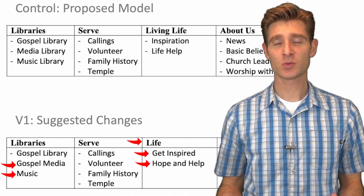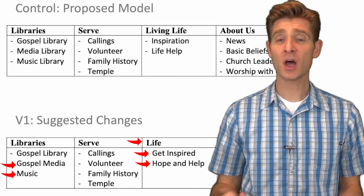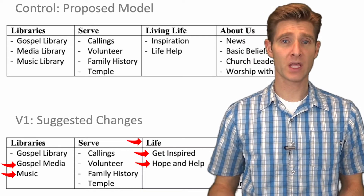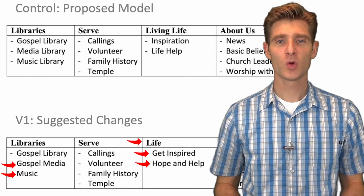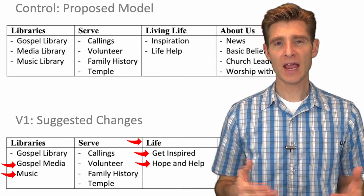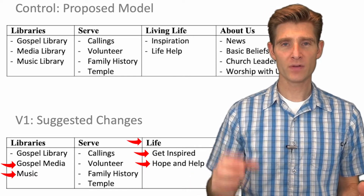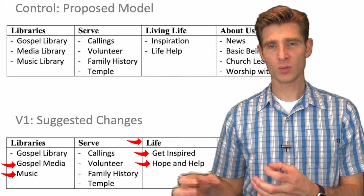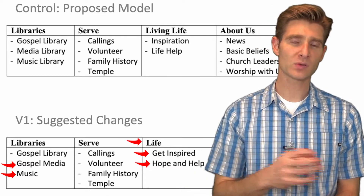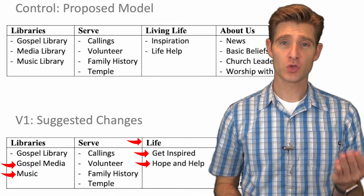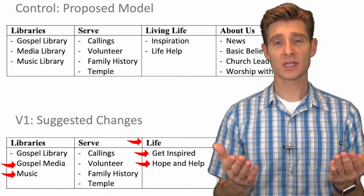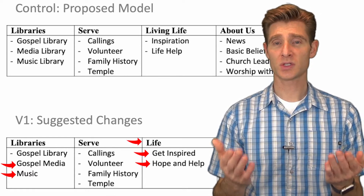We had recently run a series of navigation tests, and in one of the last navigation tests we wanted to try alternate words for some of the navigation items. For example, instead of 'life help' we wanted to try 'life.' Rather than making one variation to isolate each individual word, we decided to take the control versus all the new words in one variation — so it was just two variations.